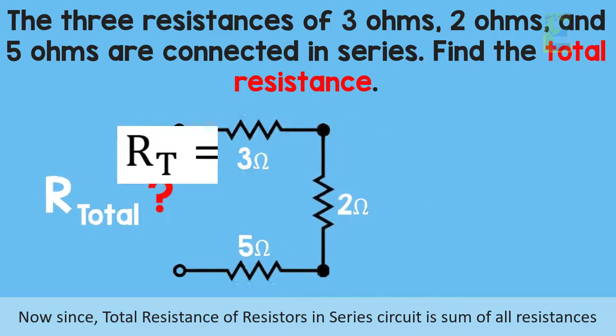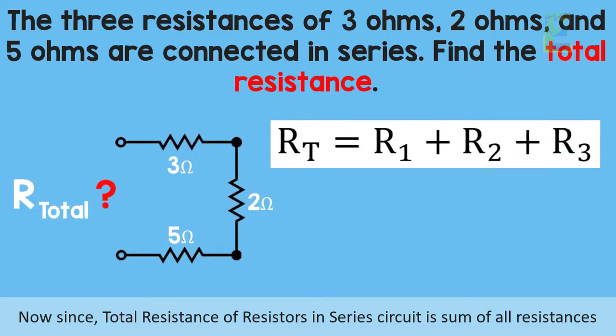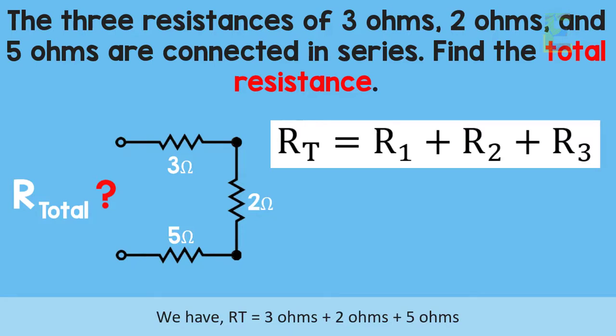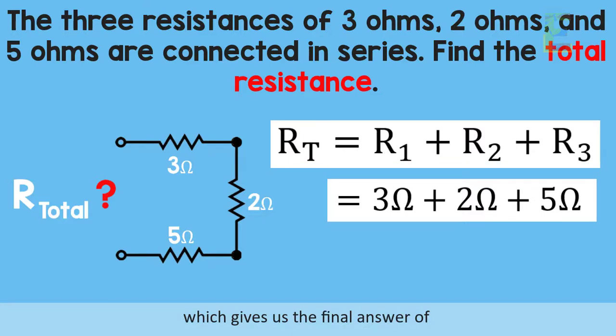Now, since total resistance of resistors in series circuit is the sum of all resistances, we have total resistance is equal to 3 ohms plus 2 ohms plus 5 ohms, which gives us the final answer of 10 ohms.